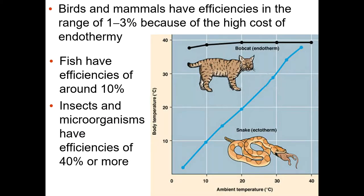You don't need to memorize any of this, but birds and mammals have an efficiency of about 1% to 3% because of the high cost of endothermy. You should know what endothermy means — that means warm-blooded. A warm-blooded organism keeps a stable body temperature, as opposed to an ectotherm like a snake that keeps the same body temperature as the outside environment.